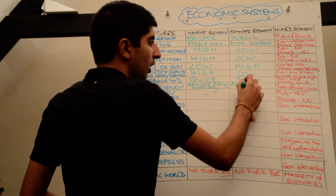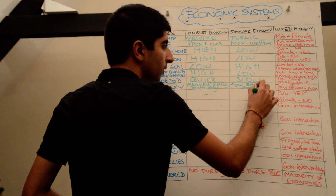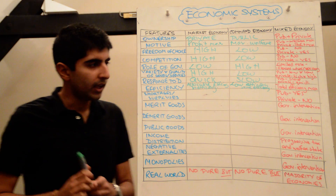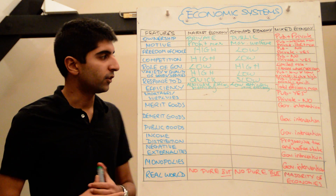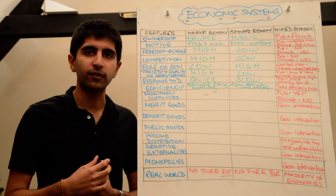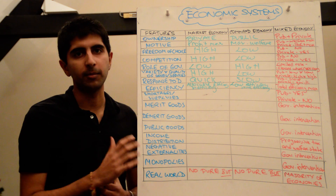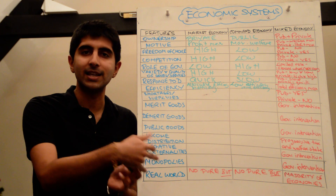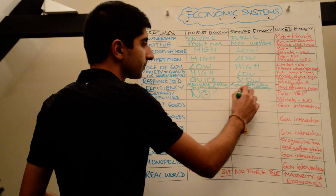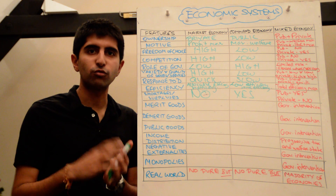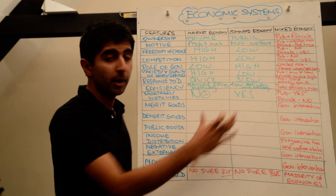In a command economy, we can argue there might be low efficiency: there is no striving to cut costs, there may be waste creeping into nationalised firms, and there is no incentive to use economies of scale available to a firm. But command economies are less likely to suffer from market failures in the same way market economies are, so potentially greater efficiency in that respect. Shortages and surpluses won't exist in market economies, whereas in command economies, there is no price mechanism to ration surpluses and deal with shortages, so they may well exist there.